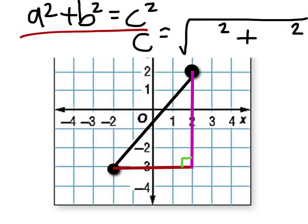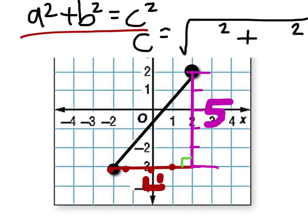It's always going to be the hypotenuse we're solving for. Let's look first at the vertical side — the up-and-down change. Looking at our purple line here, you count one, two, three, four, five — so this is five units long. What about the red one? Looking at our horizontal change, it is one, two, three, four — so this is four units long. We can simply put these into our equation to find the length of the hypotenuse.